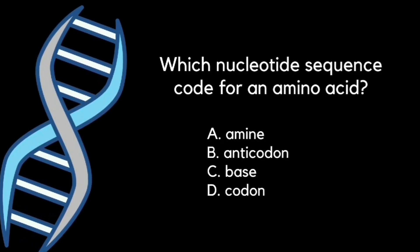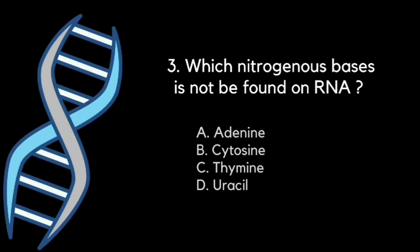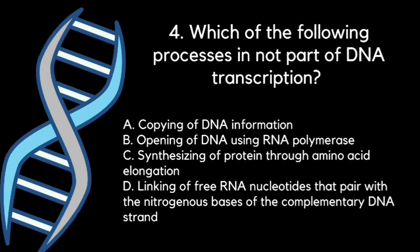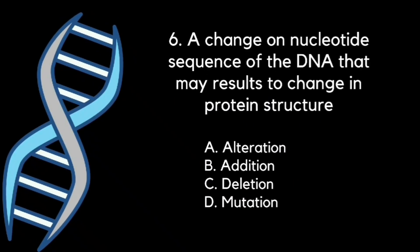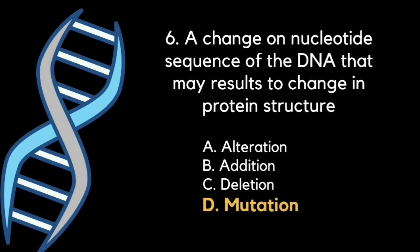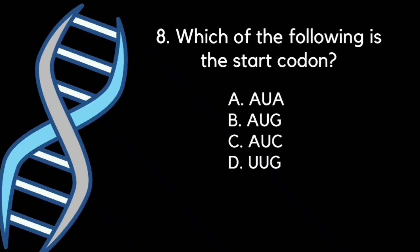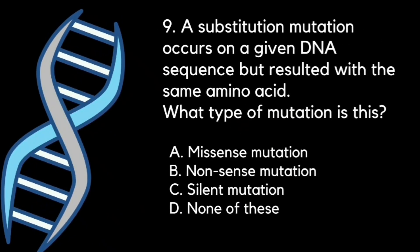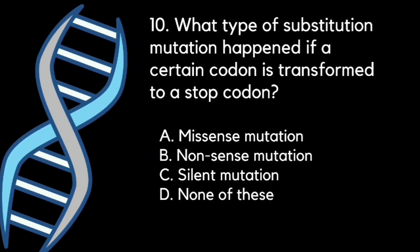Which nucleotide sequence codes for an amino acid? Which is not a function of protein? Which nitrogenous base is not found in RNA? Which of the following processes is not part of DNA transcription? What will be the mRNA complementary strand of a given DNA sequence? Which of the following mRNA codons codes for amino acid histidine? Which of the following is the start codon? A substitution mutation that results in the same amino acid is what type of mutation? What type of substitution mutation occurs when a certain codon is transformed into a stop codon?